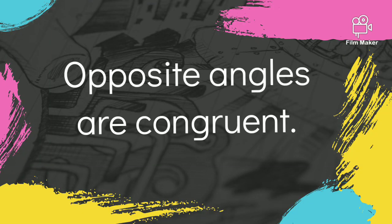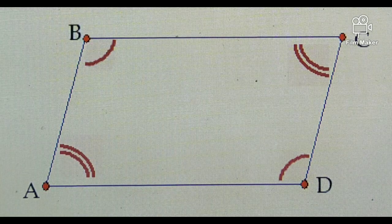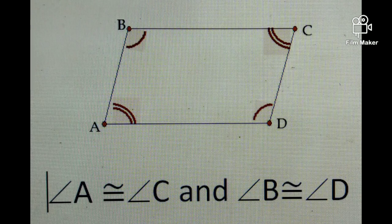The second property is opposite angles are congruent. So in this figure, angle A and angle C are congruent since they are opposite with each other. And same true with angle B and angle D. They are also congruent since they are opposite with each other.